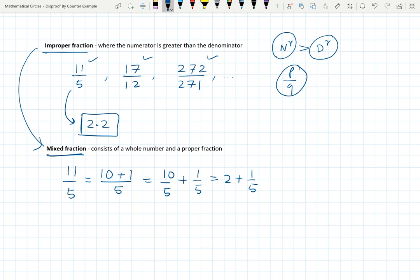So that's why, when we are talking about 11 by 5, 11 fifth, 11 fifth is nothing but 2 and 1 fifth.